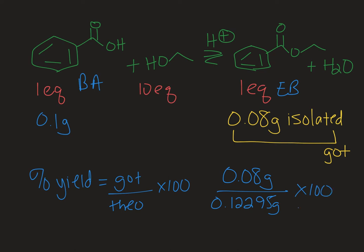And if we do that, it gives us about a 65% yield for this particular chemical reaction given that 0.08 grams of product was isolated.